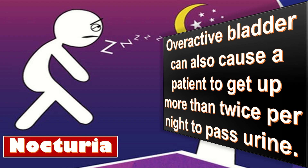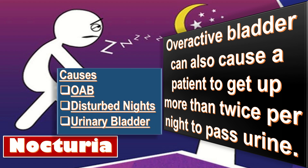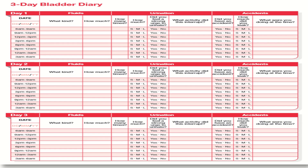The causes include OAB, disturbed nights, and urinary bladder problems or urinary tract problems other than OAB. Here we have a three-day bladder diary, and I will make a separate video to explain it in detail.